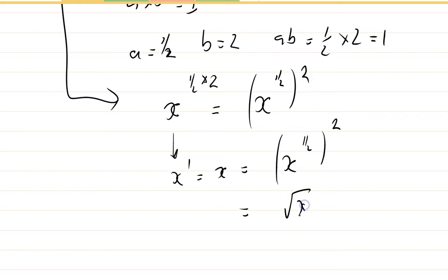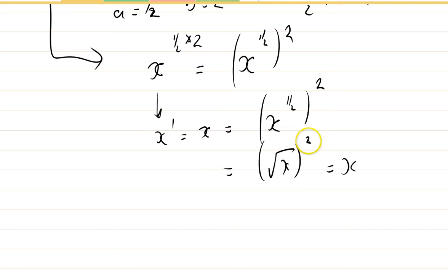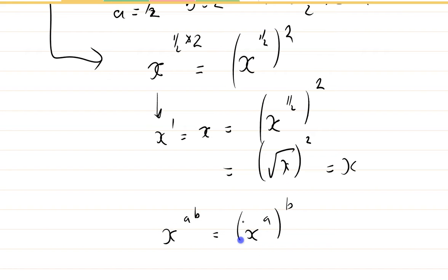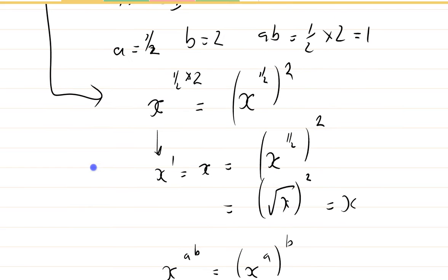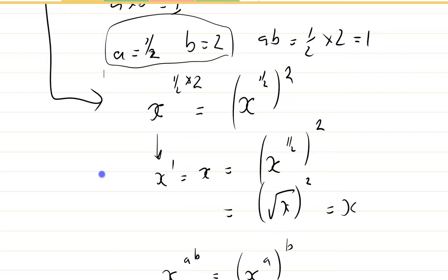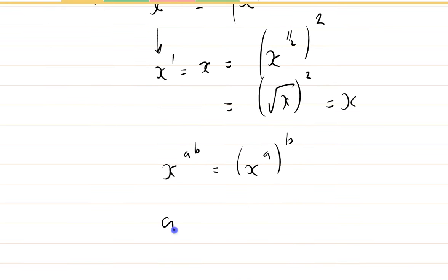That's nice because we've got a notation already for x to the power of a half, which is root x. So root x squared equals x — we knew that, because you take the square root of x and you square it, you go back to where you started. We can also write: x to the power a·b equals x to the power a, all to the power b. I always write down the fundamental relationship — that's why I never forget it. Now let's try it the other way around: a equals two and b equals one half. Do we get anything different?